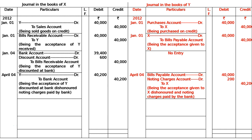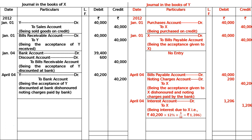On 4th April 2012, Y accepts a new bill for three months for the amount then due to X, together with interest at the rate of 12 percent per annum. In the books of Y, interest account is debited to X. Interest is calculated on rupees 40,200 at 12 percent per annum for three months: 40,200 × 12/100 × 3/12, which equals rupees 1,206. So interest account debited to X for rupees 1,206.